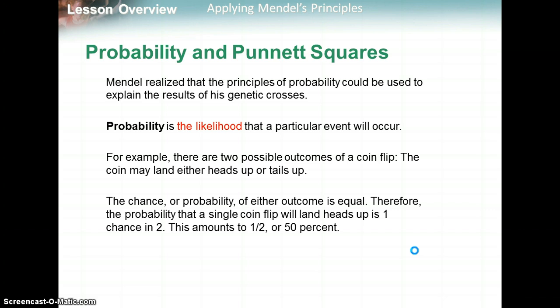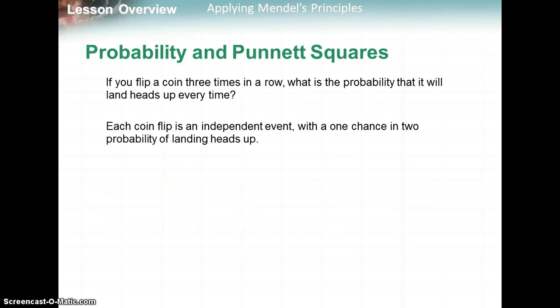Probability is the likelihood that a particular event will occur — not necessarily what's definitely going to happen, but the likelihood that something could happen. For example, if you flip a coin, it may land either heads or tails, so the chance of either outcome is equal. Therefore, the probability of a single coin flip landing heads is one in two, or one half, or 50%.